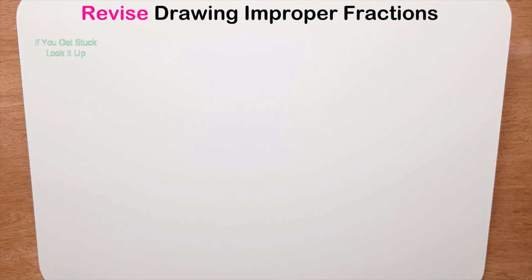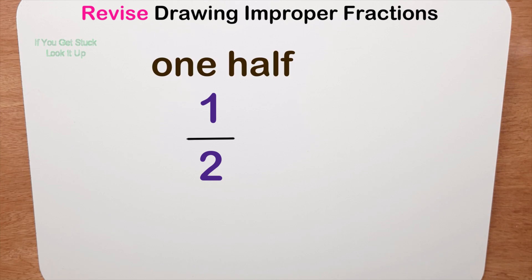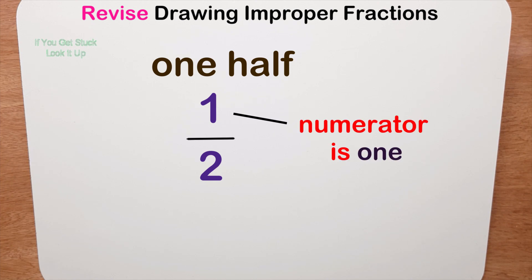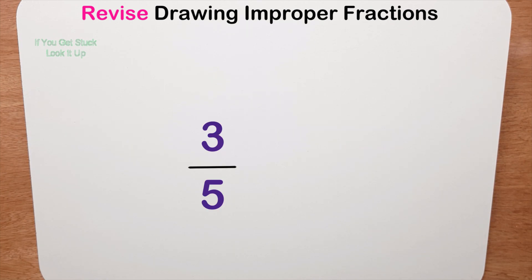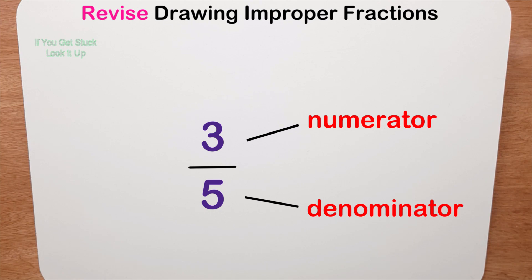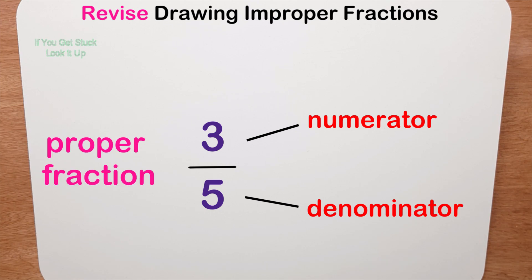Before we go on, let's quickly look back at what a unit fraction is. A unit fraction — for example, one half — is called a unit fraction because the numerator, or top number, is one. So any fraction with a one at the top is a unit fraction. We've also looked at proper fractions, where the numerator is smaller than the denominator.